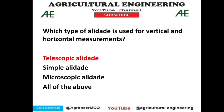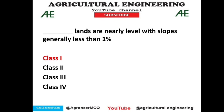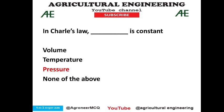The Gunter chain of 66 feet has 100 links and every link is 0.66 feet. The alidade is used in plane table survey to define lines and plot measurements — option 1 is correct. Lands that are nearly level with slopes generally less than 1 percent belong to USLE Class I — the most ideal classification. In Charles's law, pressure is kept constant — option C is correct.